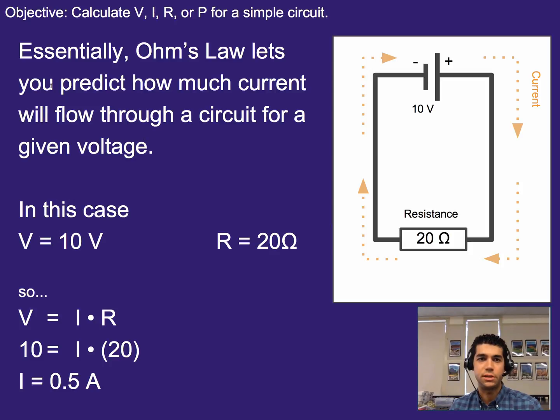Alright. So essentially Ohm's law lets us predict how much current will flow through a circuit for a given voltage. So for example, if we had a 10 volt battery and we had a 20 ohm resistor, we could figure out how much current will flow through. So we plug in and we get that the current will be 0.5 amps. So we can use this to predict. It's quite handy in that sense so that we can make sure we're not having too much current flow. In which case it might cause some damage or heat things or melt things or things like that.